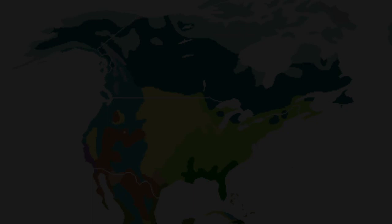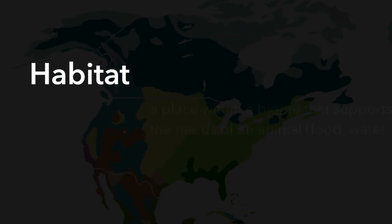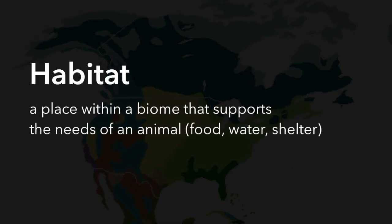Within those biomes are several different types of habitats. A habitat is a place within a biome that supports the needs of an animal. The basic needs for every animal are food, water, and shelter.